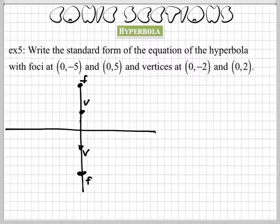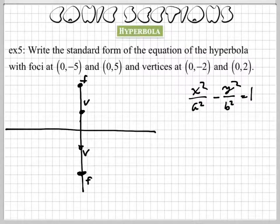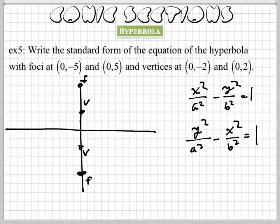So what is the standard form equation for a hyperbola? Well, it's either going to be x²/a² - y²/b² or it's going to be y²/a² - x²/b². How do I tell the difference? Which is which?